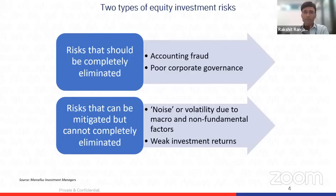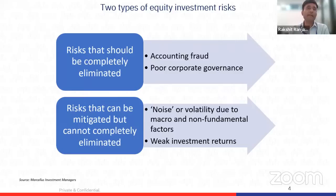Broadly speaking, there are two types of risks that investors get exposed to when they invest in equities. The first risk is a binary risk, which should be completely eliminated, because if it plays out, there is a massive capital erosion — not just a reduction in returns, you can actually be wiped out of the bulk of your capital invested in the relevant stock.